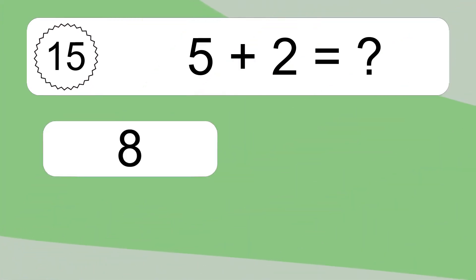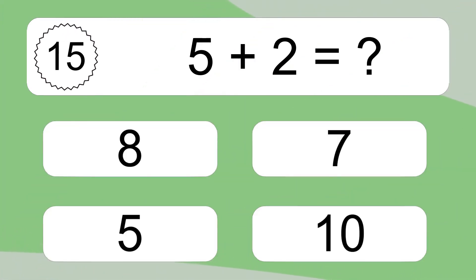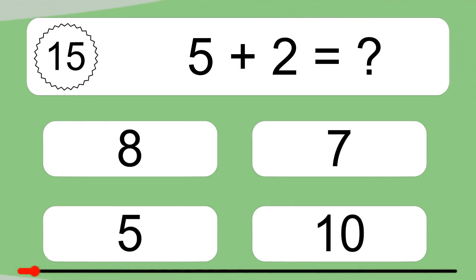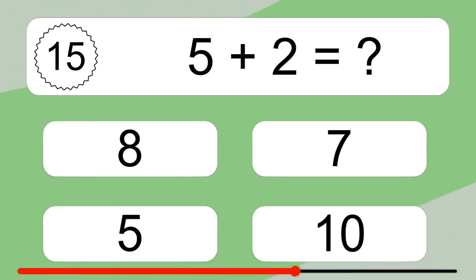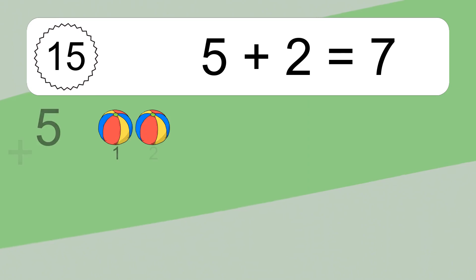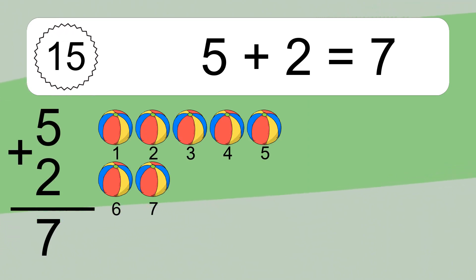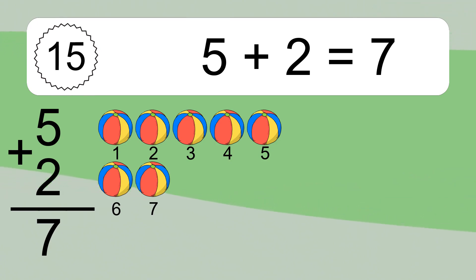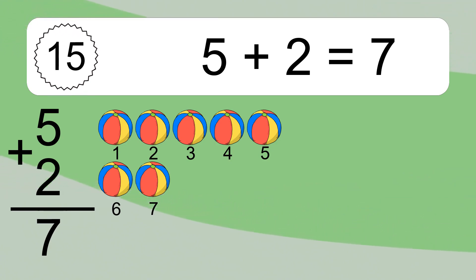5 plus 2 equals what? 1, 2, 3, 4, 5, 6, 7. Let's count it. 1, 2, 3, 4, 5, 6, 7.